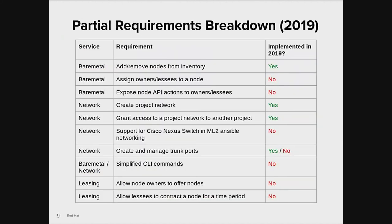So that's what we want to do. What steps have we taken to get there? Let's look at the partial requirements breakdown from back in 2019. It's not a complete requirements list, but it illustrates a lot of the work that we've done. Starting with the bare metal service, or Ironic: we need to be able to add and remove nodes from inventory, something Ironic already does very well. We also need the ability to assign owners and lessees to a node, and for those owners and lessees to be able to perform limited API actions. Combined, this translates into node multi-tenancy, which was not supported by Ironic when we started, so it ended up being something we implemented ourselves.